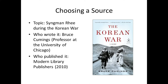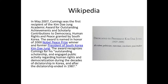I saw Bruce Cummings speak at a conference, and the room was standing room only. This is a very well-known historian. Something kind of odd, though: the publisher is Modern Library Publishers — not a publishing house known for its academic works. But it's Bruce Cummings, so maybe it's all right. This is where Wikipedia comes in — you could look him up and see who this guy is. He's a big enough name to have his own page.